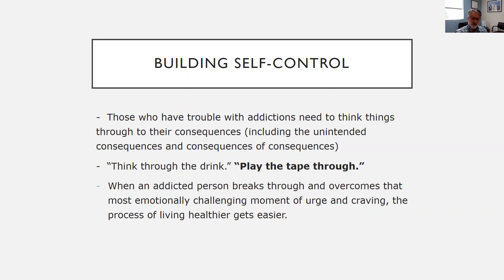Building self-control is the key to maintaining abstinence. The key to building self-control is for patients to think through the consequences of the behavior, including unintended consequences and the consequences of consequences. In AA, they talk about 'thinking through the drink' or 'playing the tape through.' When a person has an urge to use and thinks it through — where does this lead me? — that helps curb the urge. The more success they have overcoming urges and staying sober, the easier the process gets.